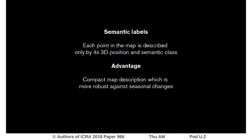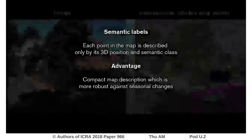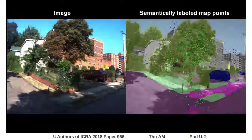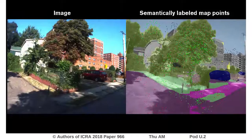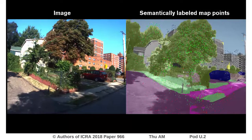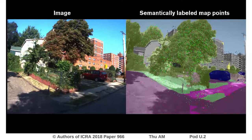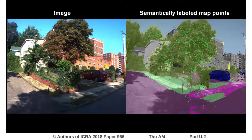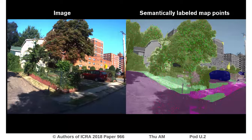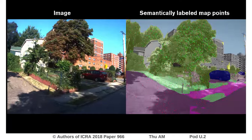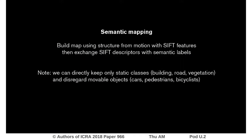With semantic labels, we cannot match points in the same manner as when using SIFT. So instead of matching points and calculating a pose, we propose a number of poses, project label points from a 3D map into the camera image, and then evaluate the score based on how many points fall in the correct region in the image.